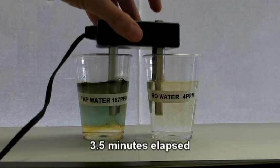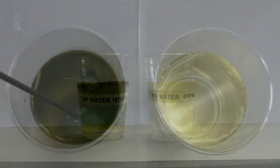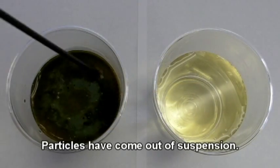This video is showing electrocoagulation being performed on three types of water: municipal tap water and bottled spring water on the left, and reverse osmosis water on the right.